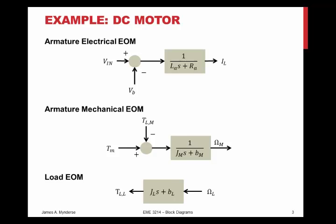If we read these from right to left, starting with the armature electrical EOM, I sub L, which is going to be the current in the armature, is 1 over LA*s plus RA multiplied by the quantity VN minus VB.